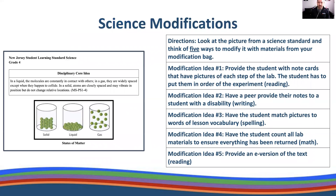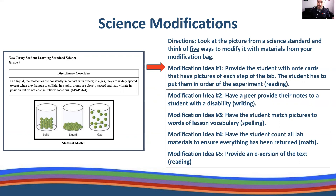Here are some science modifications. I encourage you to look at a picture from a science standard and think of five ways to modify it with your materials. Modification idea number one: provide a student with note cards that have pictures of each step of the lab, and the student has to put them in order of the experiment. This is an example of embedding reading within a science class.